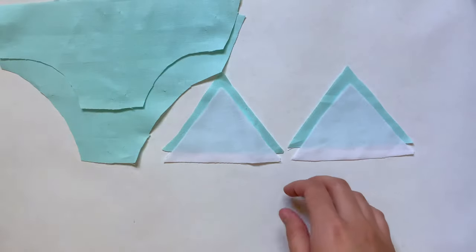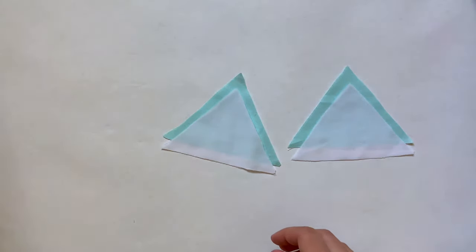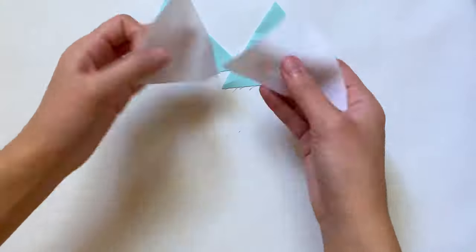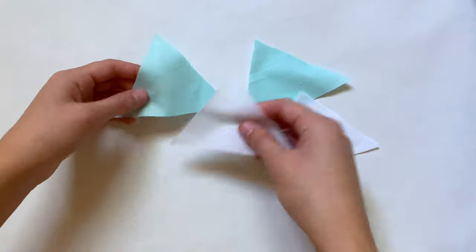As you can see, I did the triangles in two colors, one blue and one white. That's just because I was running out of blue fabric. You'll only end up seeing one side of the triangle, so the white is gonna go on the inside.